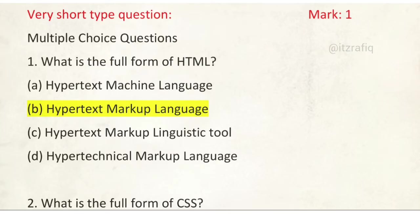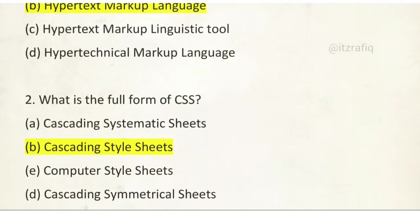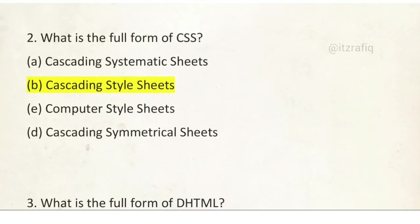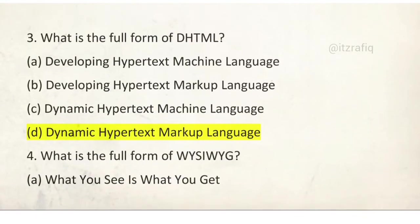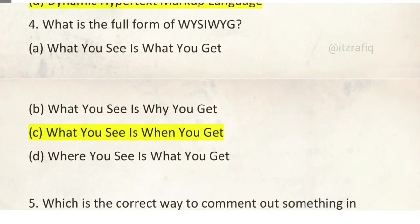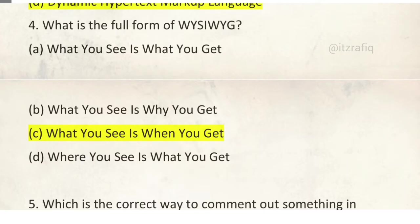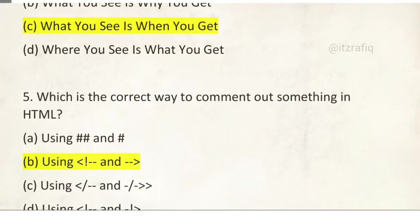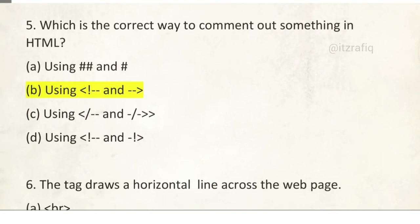Question 1: Full form of HTML. Question 2: Full form of CSS. Question 3: Full form of DHTML. Question 4: Full form of WYSIWYG. Number 5: What is the correct way to comment out something in HTML? It is by using bracket, then exclamatory sign, two dashes. After that, again two dashes, bracket close.